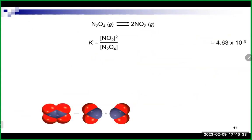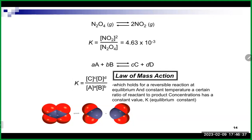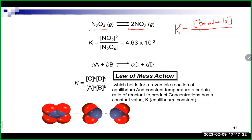The equilibrium constant is specific for exactly how the equation is written — it assumes reactants go to products. Whether something is on the reactant or product side, the equilibrium constant value given is specific for that arrangement. In general, the equilibrium constant is the concentration of your products divided by the concentration of your reactants.